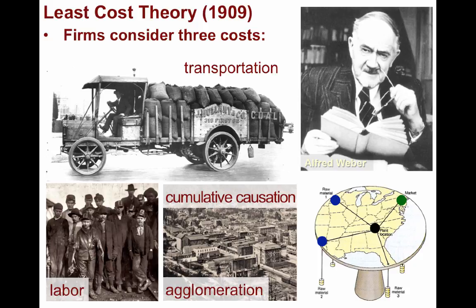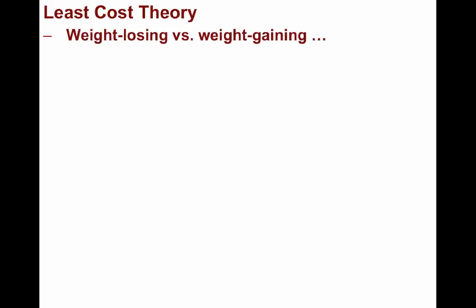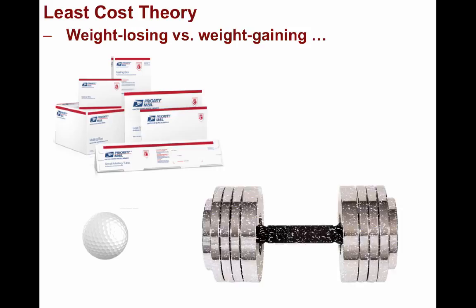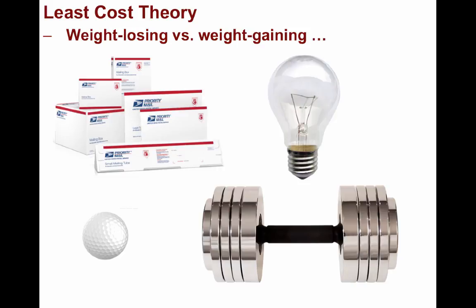Weber narrowed this model down to two separate cases: the weight-losing case and the weight-gaining case. Just think when you go to the post office to mail a package — one of the first things they do is measure it and weigh it. A durable and relatively lightweight good, such as a golf ball, would be far less expensive to transport than something heavy or bulky, such as barbells. However, even if something is light, it still may be expensive to transport, such as a light bulb. Nonetheless, Weber's least-cost theory only focuses on the weight or size of a good, not the fragility.